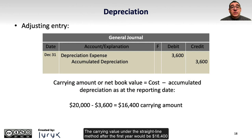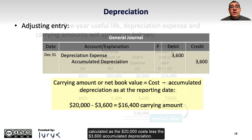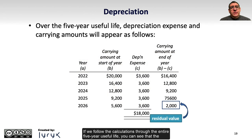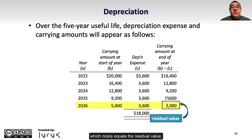The carrying value under the straight-line method after the first year would be $16,400, calculated as the $20,000 cost less $3,600 accumulated depreciation. Following the calculations through the entire five-year useful life, the depreciation expense is the same every year at $3,600, resulting in a carrying value at the end of 2026 of $2,000, which nicely equals the residual value.